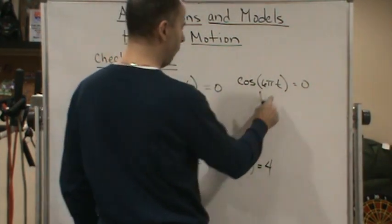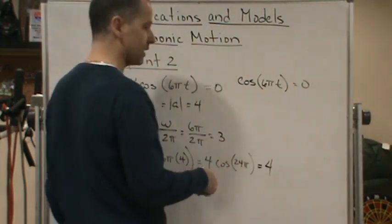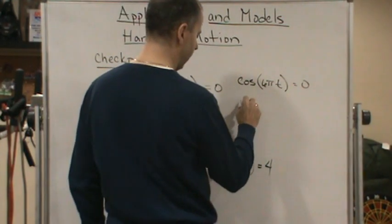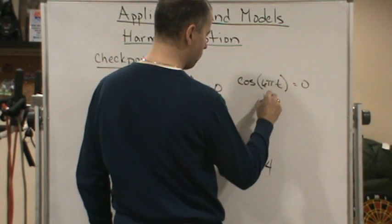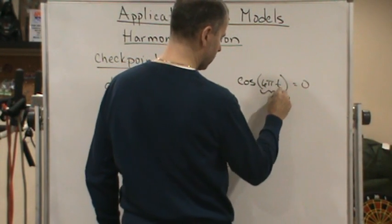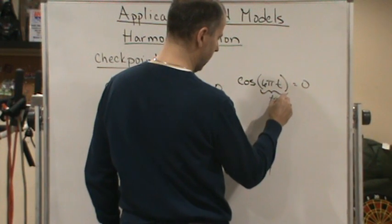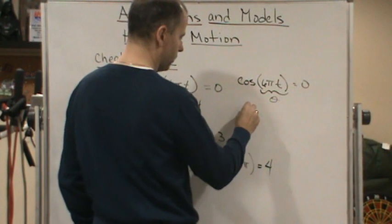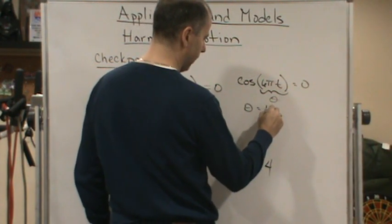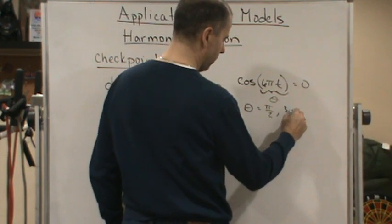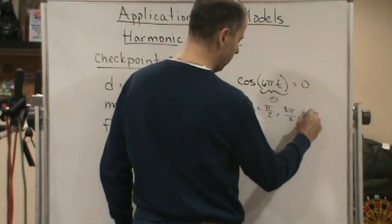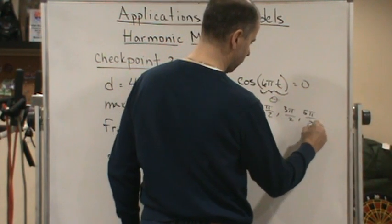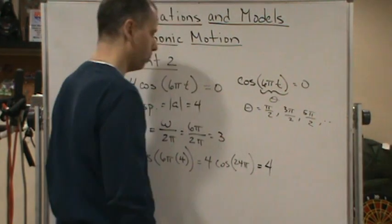And so we know what values of T, cosine is 0. When this, let's call this theta. So when theta is equal to what? Pi over 2, 3 pi over 2, 5 pi over 2, and so on.